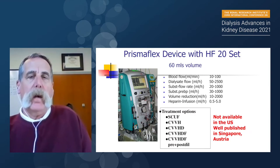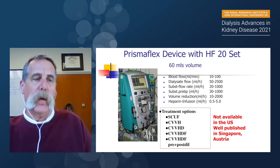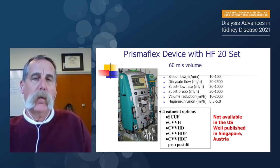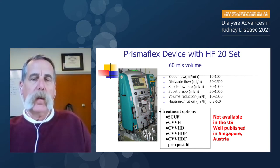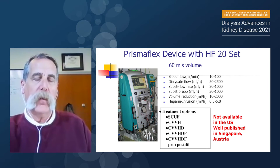In Europe and now in the United States under COVID restrictions, the Prisma Flex now has the HF20 set — a polysulfone membrane that allows for smaller children. For an 8-kilo child with intravascular blood volume of 80 cc/kg, that's 640 mL, putting you at about 9% extracorporeal, so a blood prime can be done. This has not been available in the United States until recently, but it's well published in Singapore, Australia, and a recent publication in Pediatric Nephrology from studies in North America.